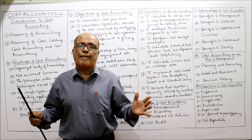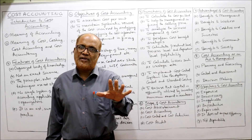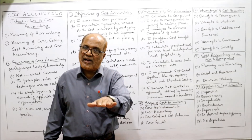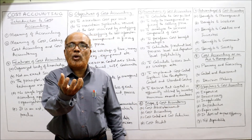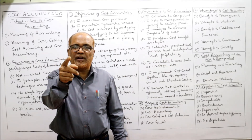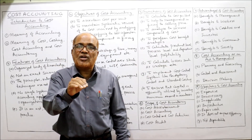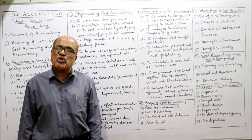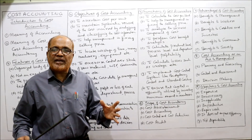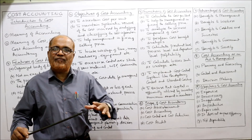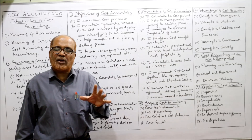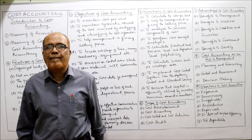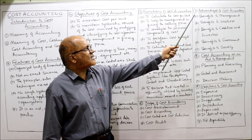The scope now also includes cost control and cost reduction. Due to stiff competition, only the fittest organizations survive — we cannot unlimitedly increase selling prices as that would affect demand. The alternative is to control costs in order to increase profitability. Finally, cost audit — examining and verifying costing records to ensure they are accurate, up-to-date, and correct — also falls within the scope of cost accounting.